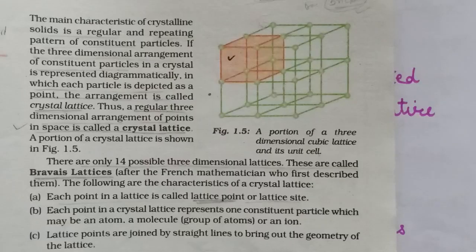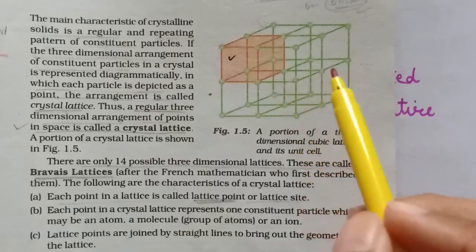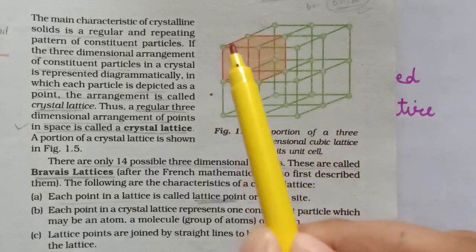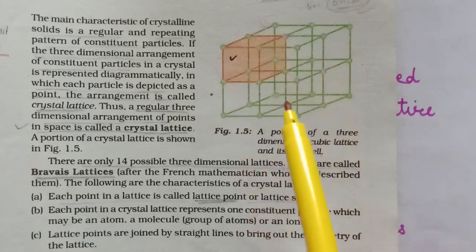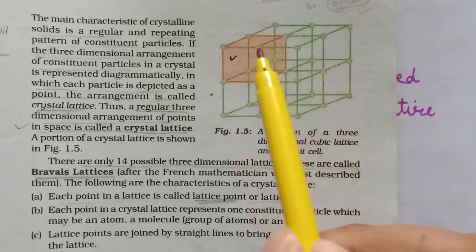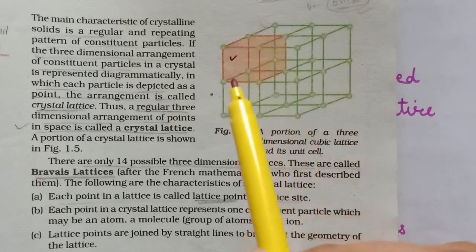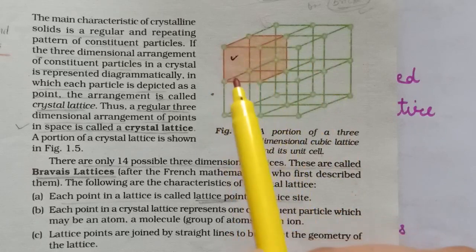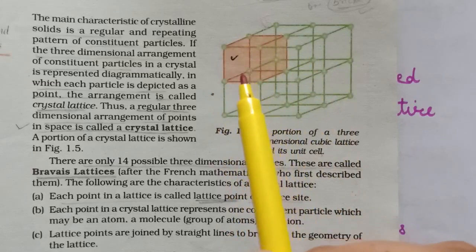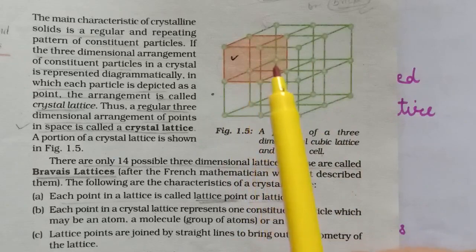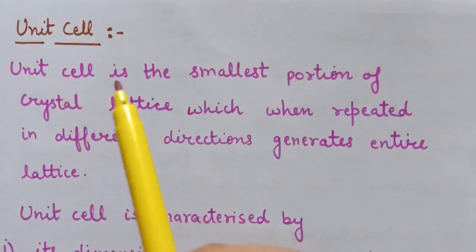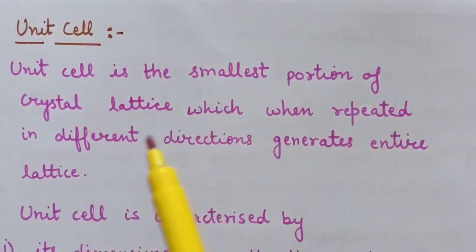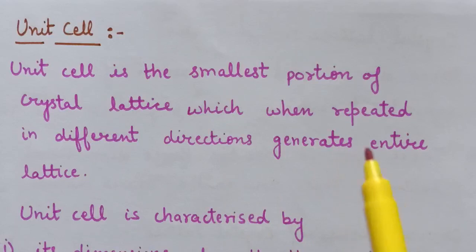Next is: what is a unit cell? As we discussed, this is a portion of a crystal lattice, and when we repeat this unit we get the entire crystal. This unit is the smallest and repeating unit in the entire crystal lattice. The smallest and repeating unit is known as a unit cell.